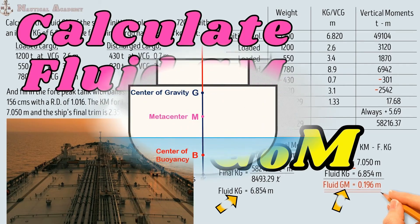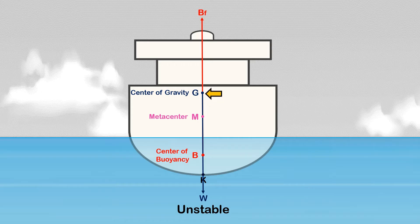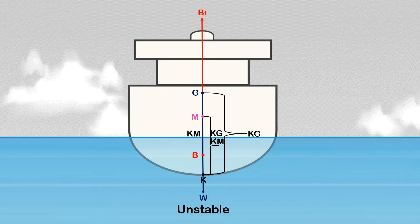A ship at an angle of loll means that she is in an unstable condition. The ship's center of gravity G is above the metacenter M, where KG is greater than KM, so the metacentric height GM is negative.